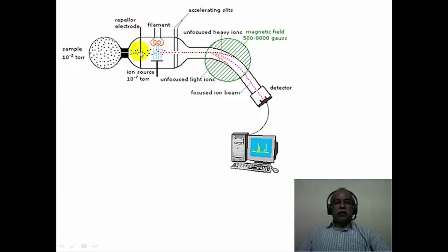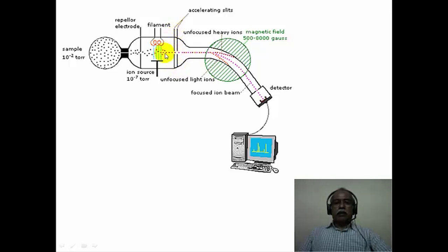There are two electrodes placed here; this is called the repeller electrode. Depending upon the voltage bias, if it is positively biased, the positive ions will get repelled. If it is negatively biased, the negative ions will get repelled, essentially getting attracted to the opposite electrode on the other side of the ionization chamber. The ions get accelerated towards the opposite bias polarity and enter the acceleration zone, where a voltage is applied so that the ions are attracted through a small orifice in the electrode into the magnetic sector analyzer.